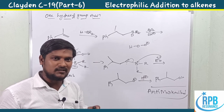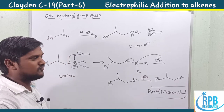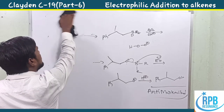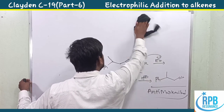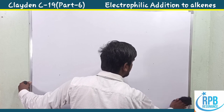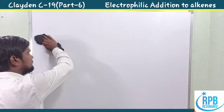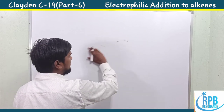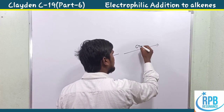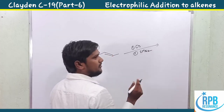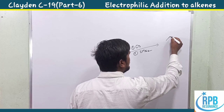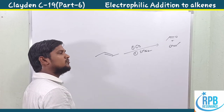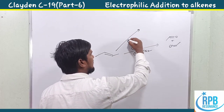Let's conclude the overall chapter. Oxymercuration gives Markovnikov addition; hydroboration followed by H₂O₂/base gives anti-Markovnikov addition. Summary: alkene treated with O₃ followed by mild reducing agent gives carbonyl compounds (ozonolysis). Alkene treated with IO₄⁻ is also a cleavage type reaction — similar to ozonolysis, both are 1,2-diol cleavages.